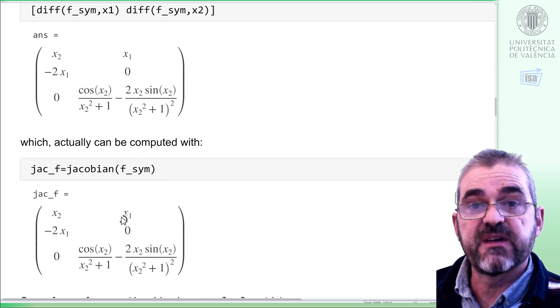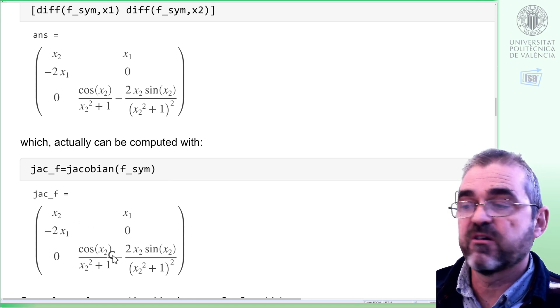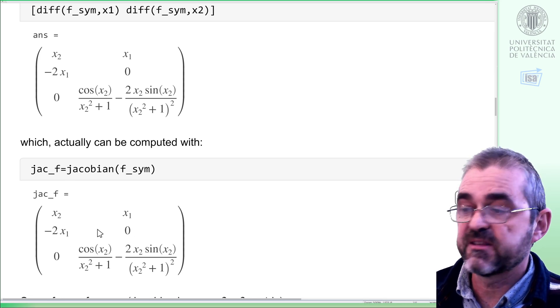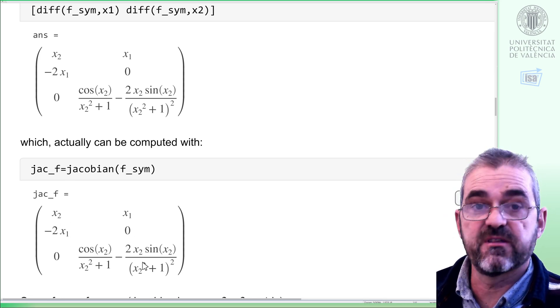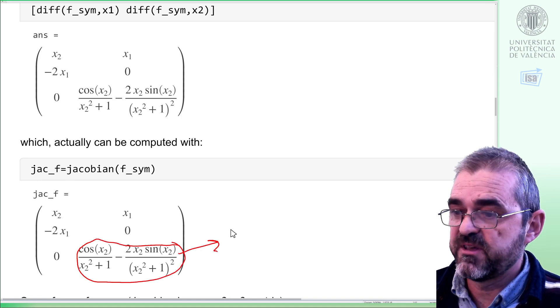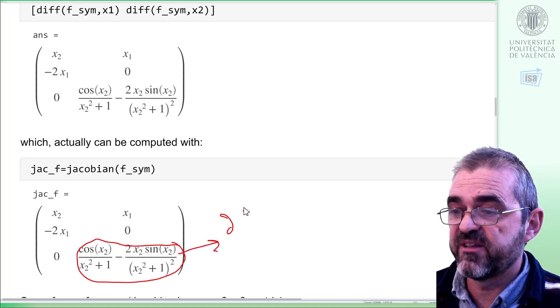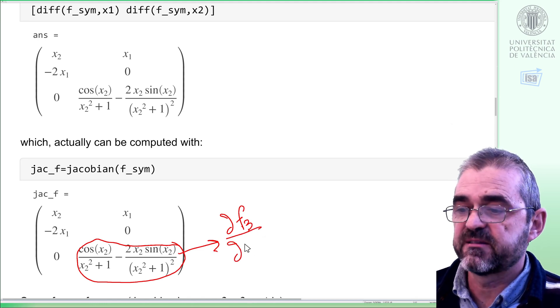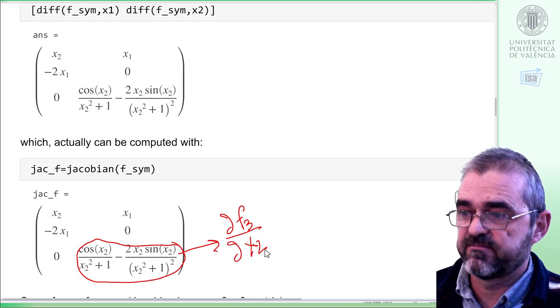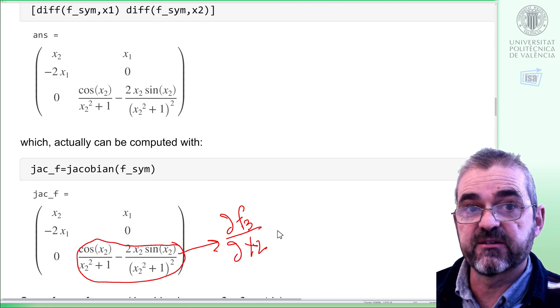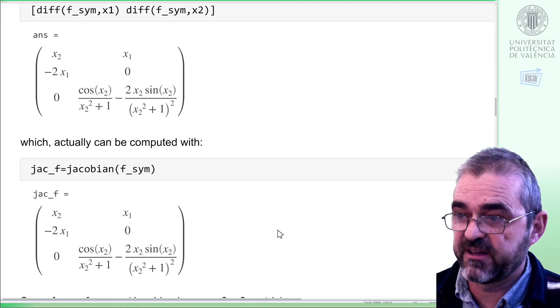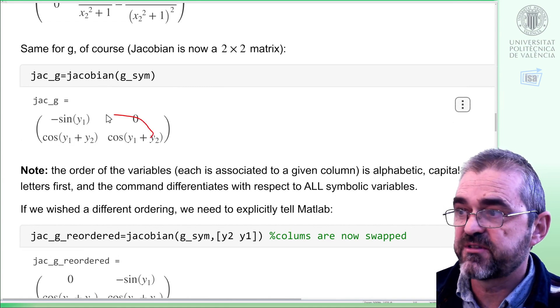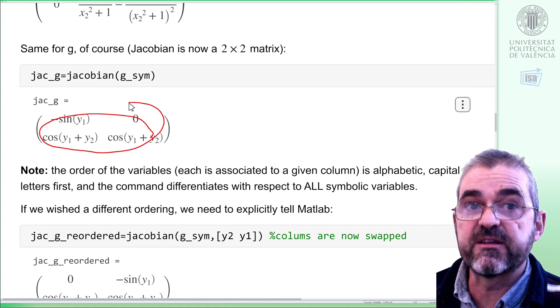In this Jacobian matrix, if I have three outputs and two inputs, then rows refer to outputs, and columns refer to inputs in this arrangement. So, for instance, this will be the partial derivative of the third element of f with respect to the second input, third row, second column. And likewise, with the rest of elements, as g has two inputs and two outputs, it's Jacobian is this two-by-two matrix.